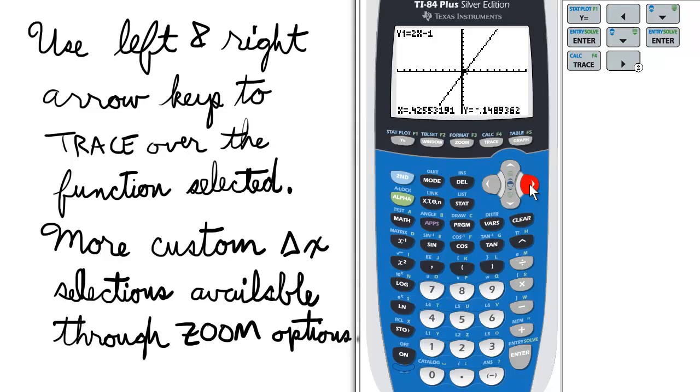If you're more interested in specific X and Y values, as would be found in a T-chart or table, see the table and table setup lessons. If you'd like to change the setting for the delta X in this mode, check different zoom options.